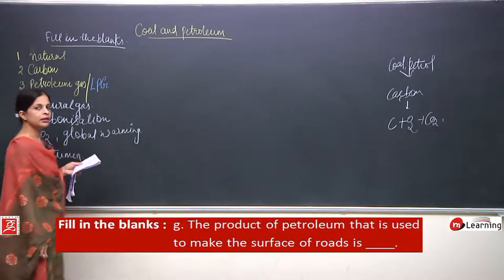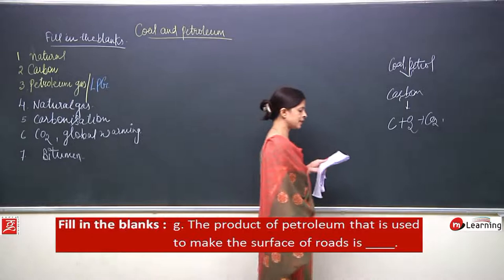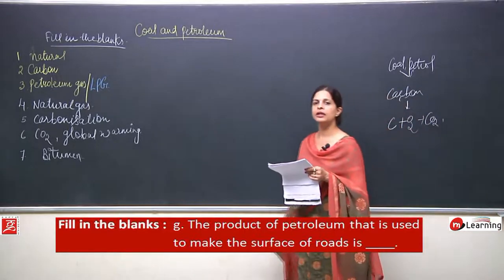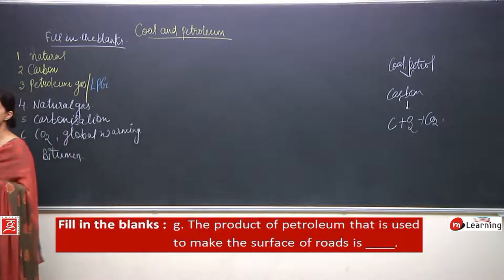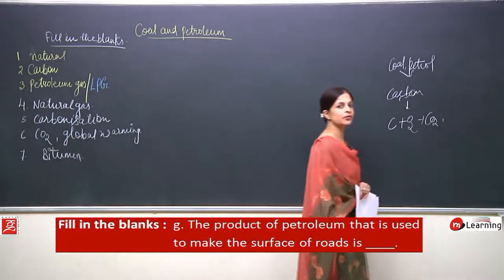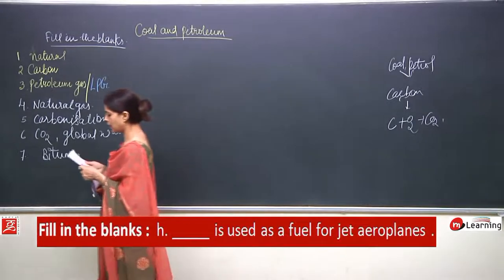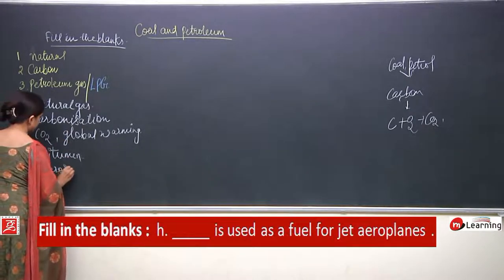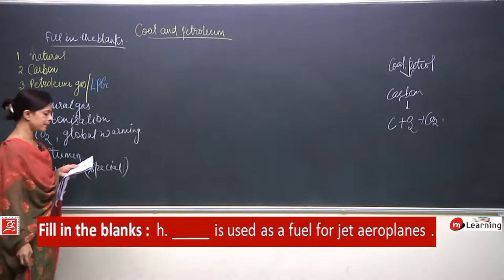The eighth one: dash is used as a fuel for jet aeroplanes. Actually, a special type of kerosene is used in jet planes — not the normal kerosene we use as domestic fuel. Special kerosene is used as fuel for jet aeroplanes.